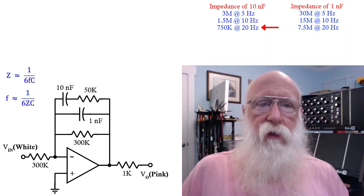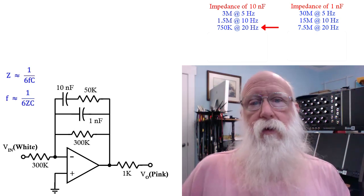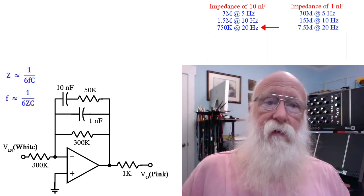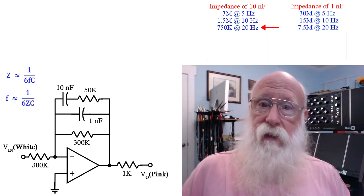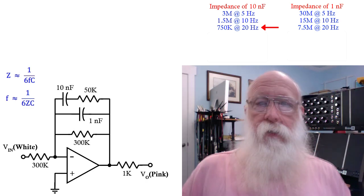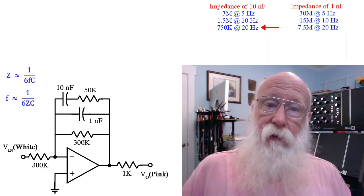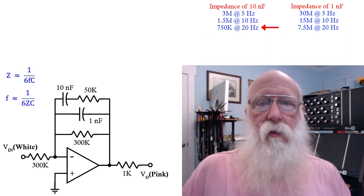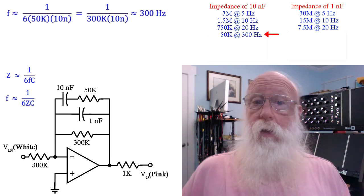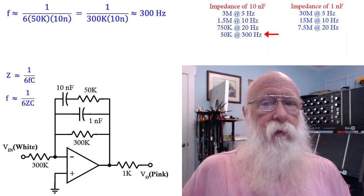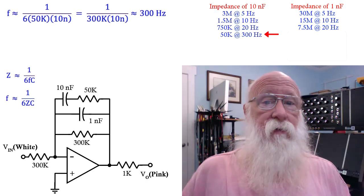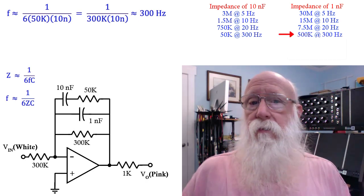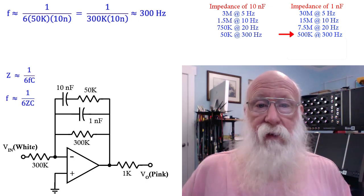Now, as the frequency continues to increase, let's ask the question, when is the impedance of that 10 nanofarad equal to 50K, the resistor it's in series with? So if you work that out, again, using our approximations, you come out with 300 hertz. Also note that at 300 hertz, the impedance of the 1 nanofarad is about 500K, so it's still considerably bigger, and will have little effect.